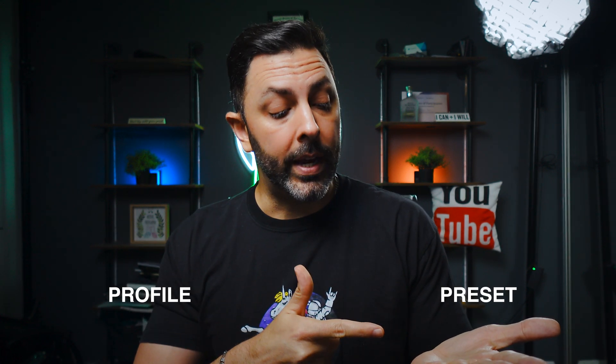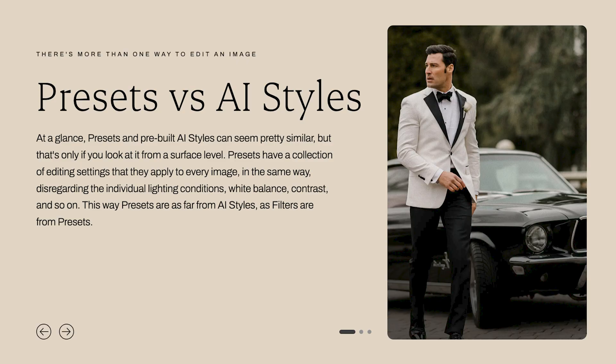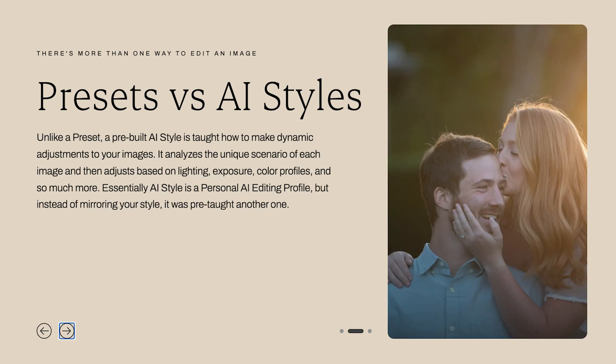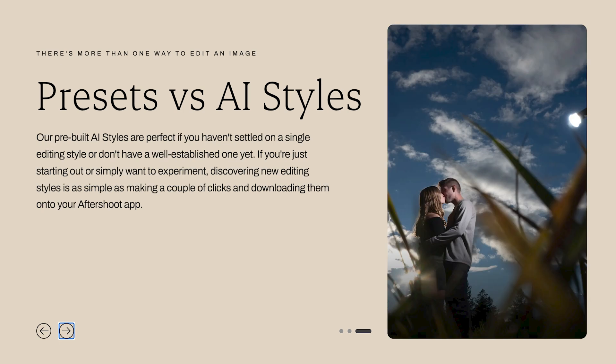Before we dive into the tutorial, I first feel as though I should explain the difference between a preset and a profile. A preset will apply a set of parameters that has already been predetermined and established all throughout the image regardless of what's going on inside of it. An Aftershoot profile, on the other hand, will use artificial intelligence to determine what's going on within that composition and apply that same set of parameters, minimizing the amount of time you need to spend in post production.